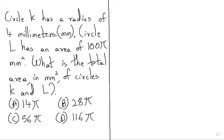Circle K has a radius of 4 millimeters. Circle L has an area of 100π mm². What is the total area in mm² of circles K and L?